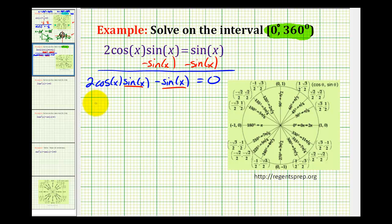So if we factor out sine x from both terms, we'll have sin(x) times the quantity 2cos(x) - 1 equals zero.